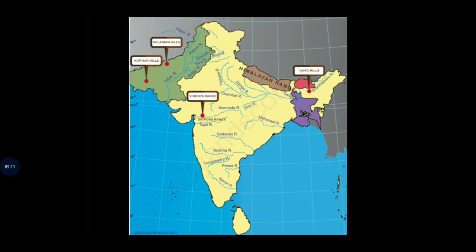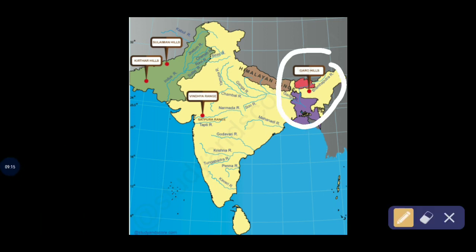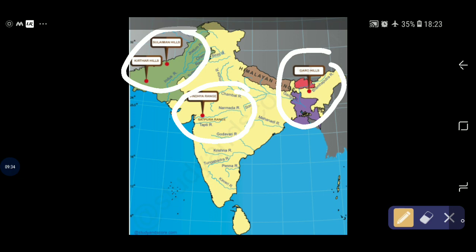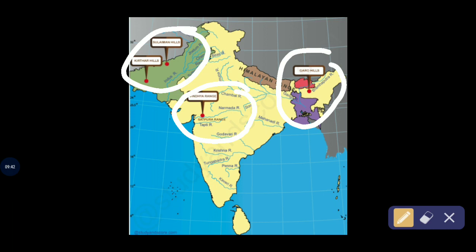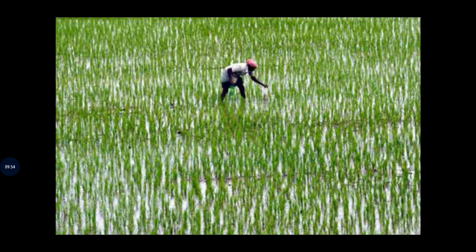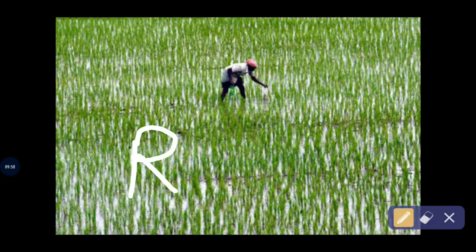Garo Hills to the northeast and the Vindhyas in central India were some of the other areas where cultivation came to be practiced, similar to Suleiman and Kirthar. Historians believed that rice was the first grown crop in the areas to the north of the Vindhyas.